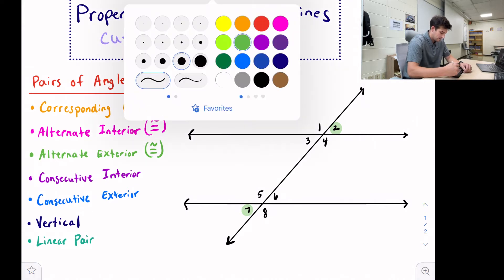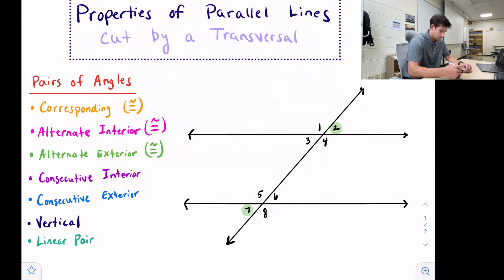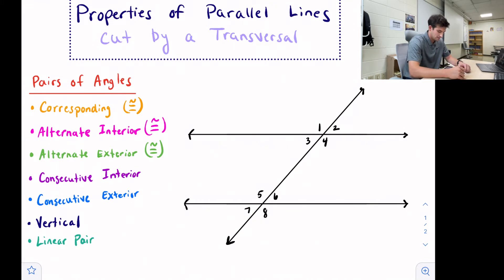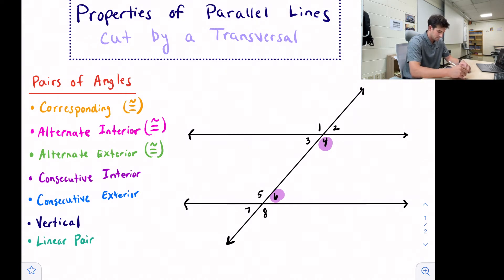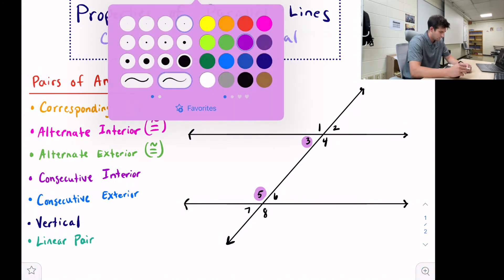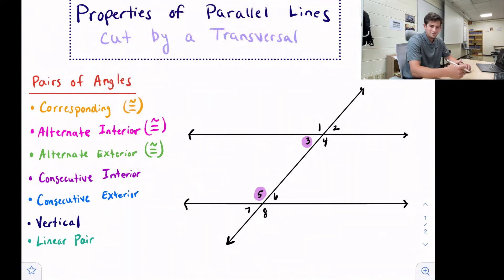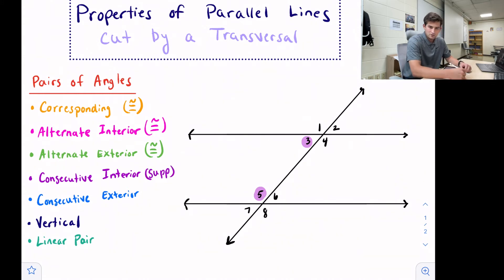Our next relationship is called consecutive interior. Interior means inside those parallel lines, but consecutive means they're on the same side of the transversal. You might also hear these referred to as same side interior. That would be angles four and six, or three and five. Looking at these angles, they don't look like they're the same measure — and that's correct. These angles are not congruent; they are supplementary.